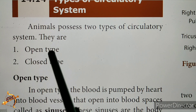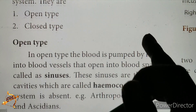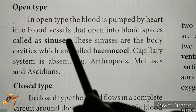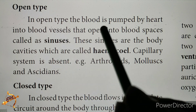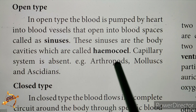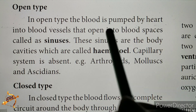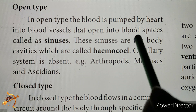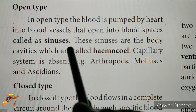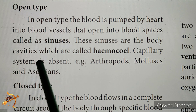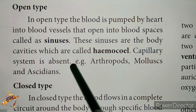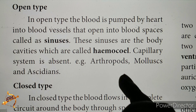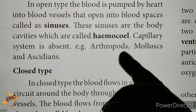Animals possess 2 types of circulatory system: open type and closed type. In the open type, blood is pumped by the heart into blood vessels that open into blood spaces called sinuses. These sinuses are body cavities called the haemocoel. The capillary system is absent in the open type.